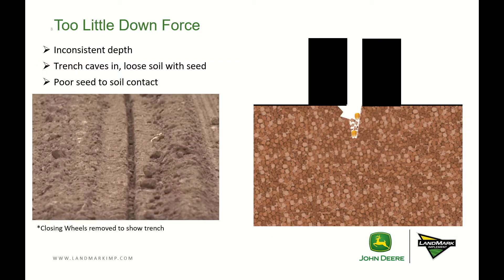Too little downforce is going to result in inconsistent depth. It could even mean that the seed is applied on top of the soil if the openers come out of the ground. We know that more speed requires more downforce. The trench can cave in — we get loose seed mixed with soil, which causes poor seed-to-soil contact. The sidewall might be crumbling, leaving pockets of air and soil that prevent good seed-to-soil contact.